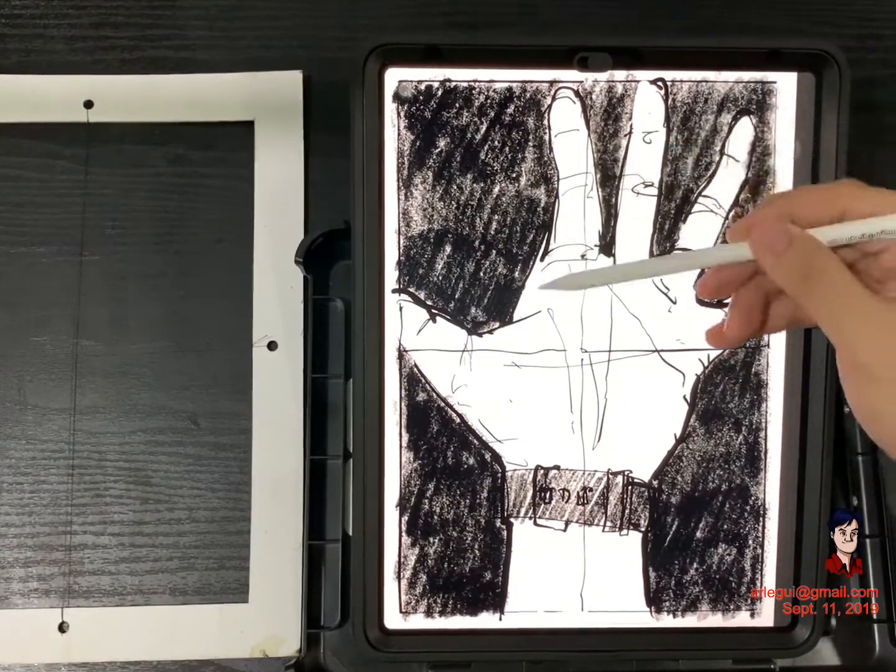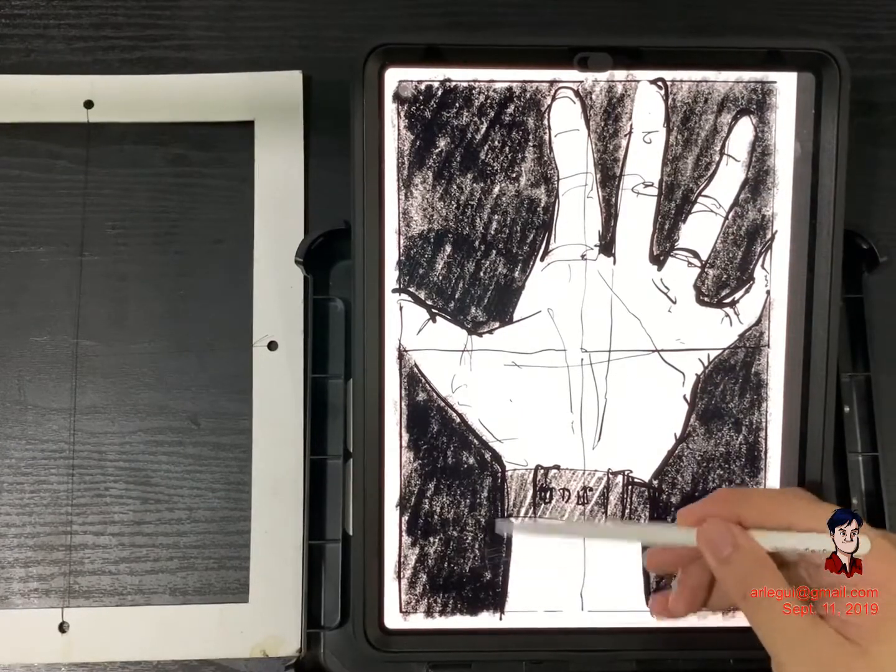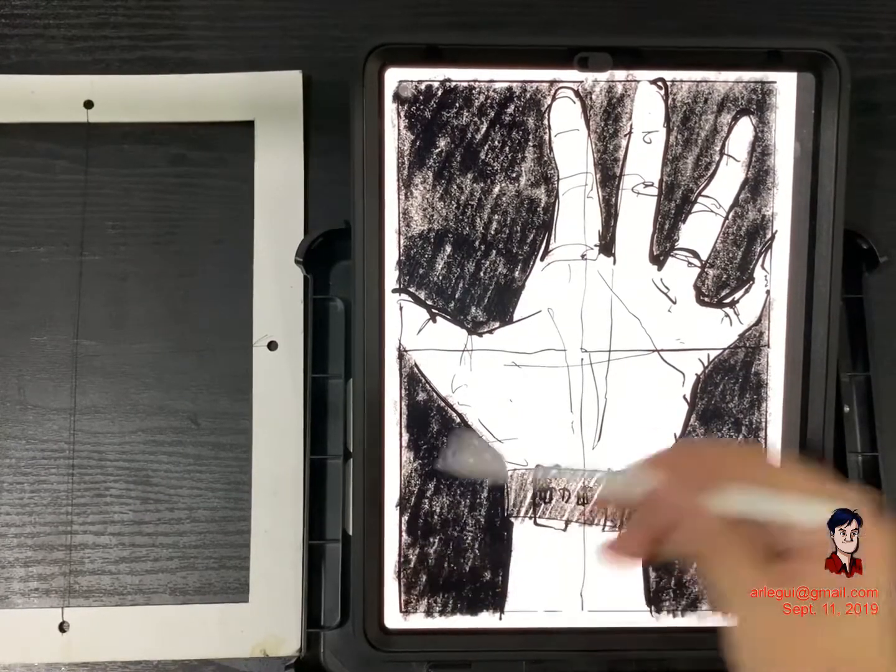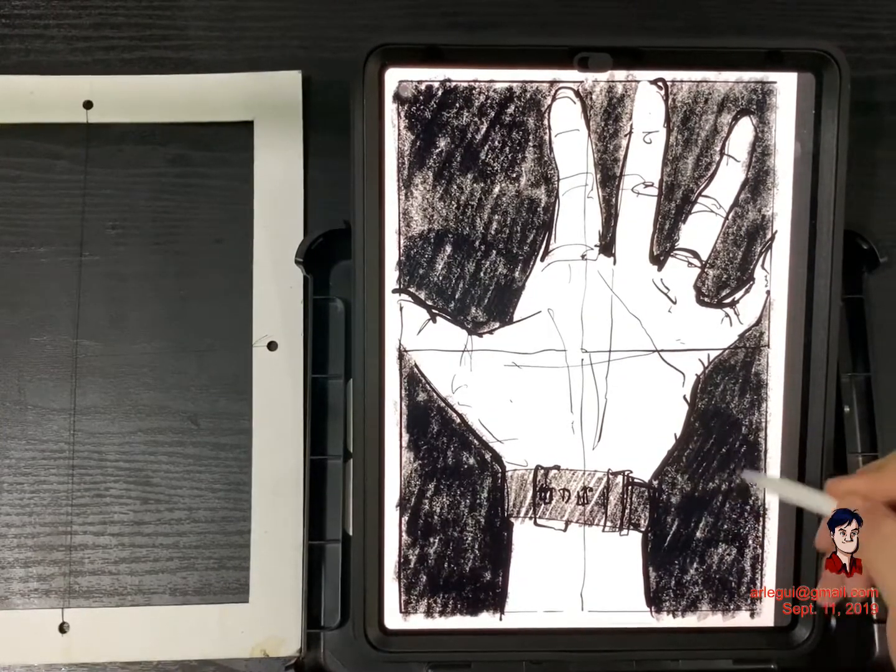Here I'm just finishing up with the shading of the negative spaces or the empty spaces—the contrast to contrast the hand. In our next video we're going to talk about angles and proportion.